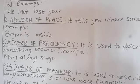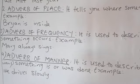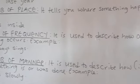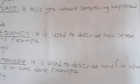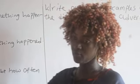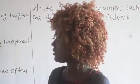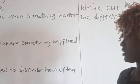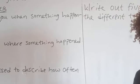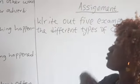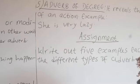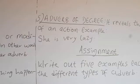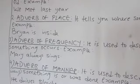The fourth type of adverb is adverb of manner. The adverb of manner is used to describe how something is being done or how something was done. For example: he drives slowly, he writes neatly — these are our adverb of manner. How he drives: he drives slowly. He talks quickly, he does things quickly. These are our adverb of manner, telling you how something is being done.